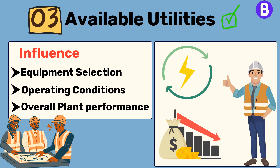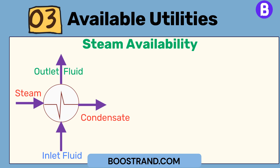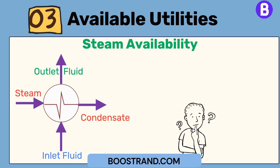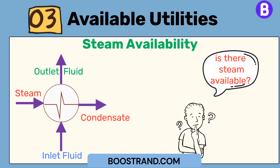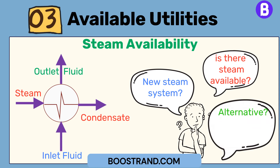This would be even more clear when starting to prepare utility consumption. For example, steam availability: if we need to heat a fluid, is there steam available to use? If it is not available, shall we consider a new steam system to heat our fluid? Or we would need to look for another alternative, such as hot oil or electric heating.